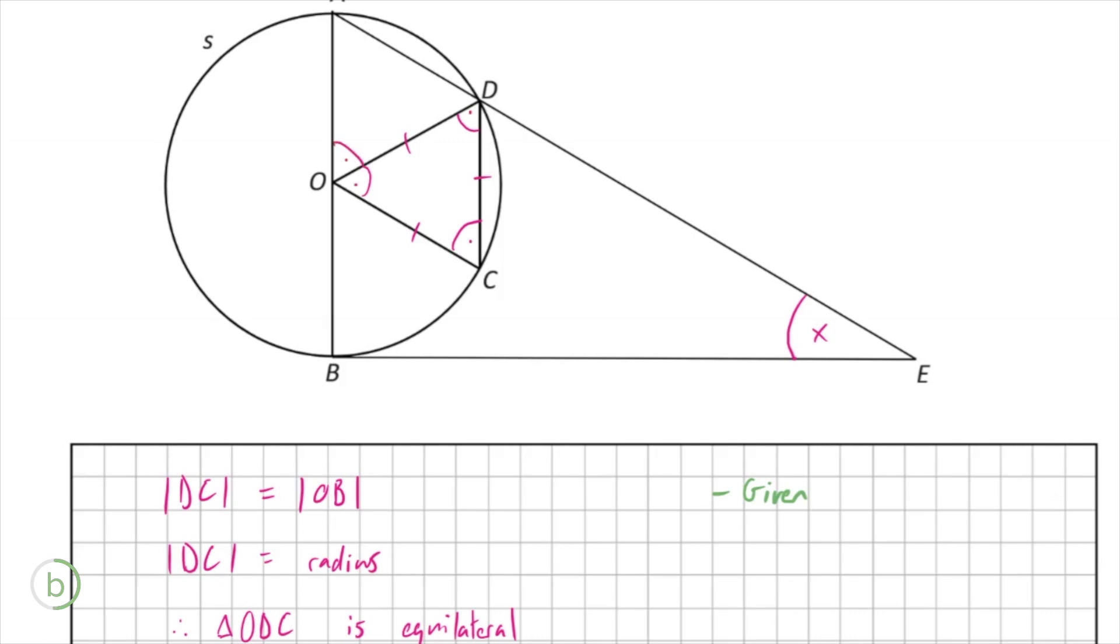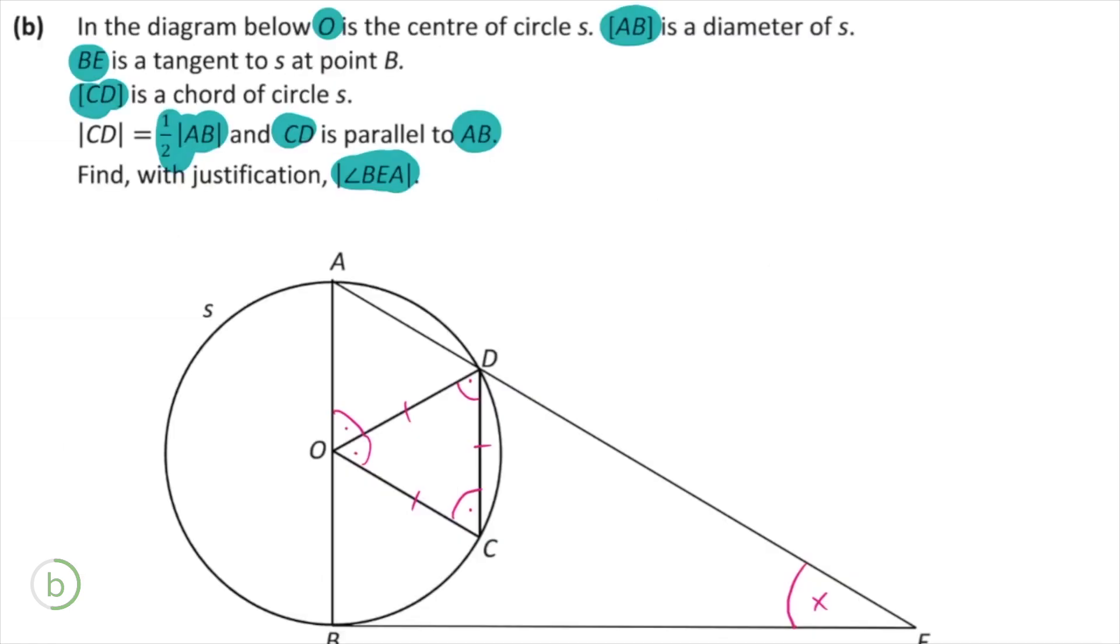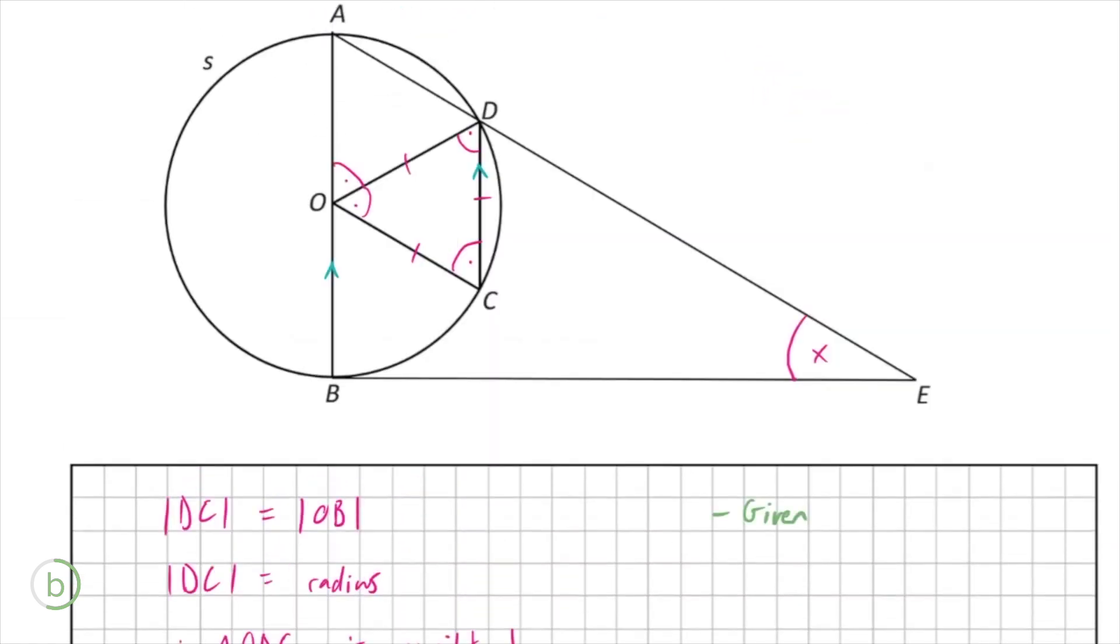Because if you remember CD is parallel to AB, so that is the angle AOD. And we also know that OA, because it's again the radius, is equal to OD, making this triangle actually isosceles as well.